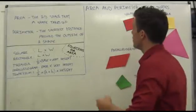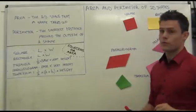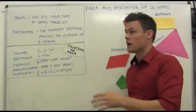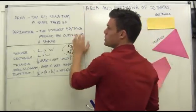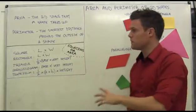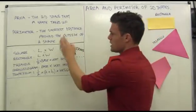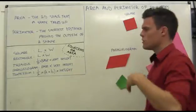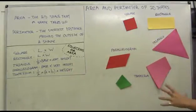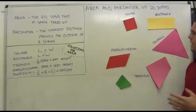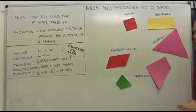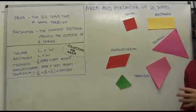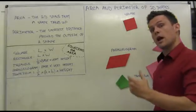Hi, welcome to this video on area and perimeter of two-dimensional shapes. If you want to pause the video now and take down these two definitions — the definition of area and perimeter — as well as the equations for the area of these five shapes, you might want to sketch the five shapes so you know what they look like and how to spell their names. Right, so assuming you've done that, we'll carry on.